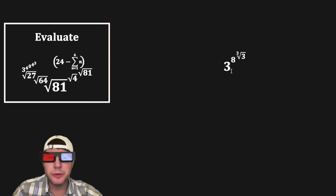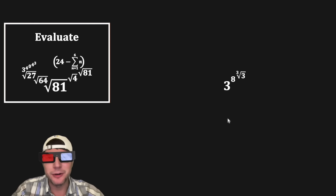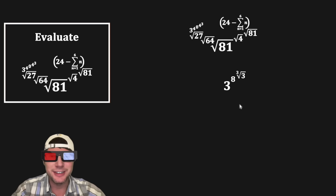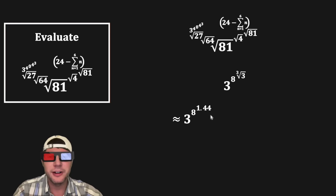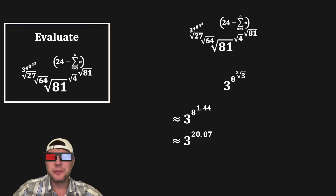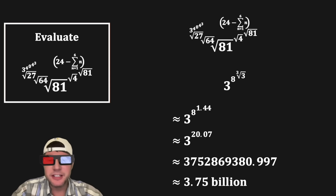Now we have a power tower: 3 to the 8 to the ∛3. I don't think we can simplify this further — this is the answer. To find an approximate value, we evaluate from the top down: the cube root of 3 is approximately 1.44, and 8 to the 1.44 is approximately 20.07. Then 3 to the power of 20.07 is approximately 3,752,869,380.997, so it ends up being approximately 3.75 billion.